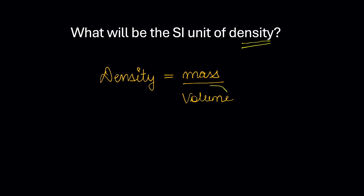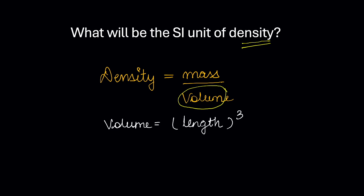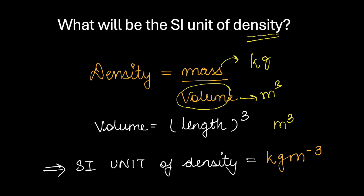I would love for you to try figuring out the SI unit of the derived physical quantity density. You may pause the video and give it a shot. Density is mass per unit volume. Here is the catch: volume is length cubed, meaning the SI unit of volume is meter cubed. So the SI unit of density will be mass — which is kg — divided by volume — which is meter cubed. The SI unit of density is kg per meter cubed.